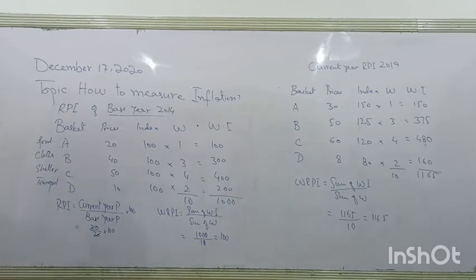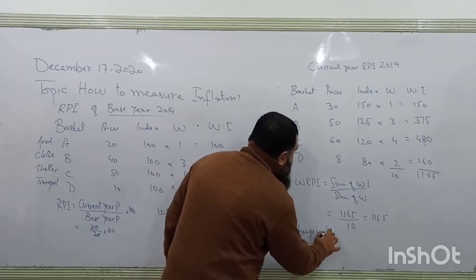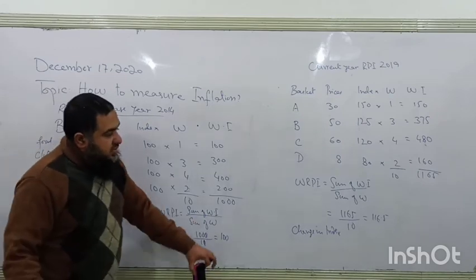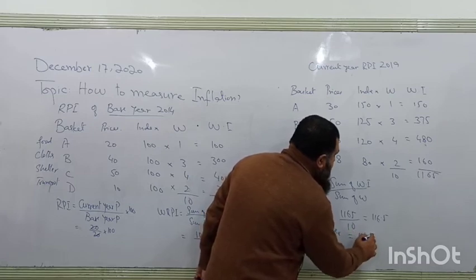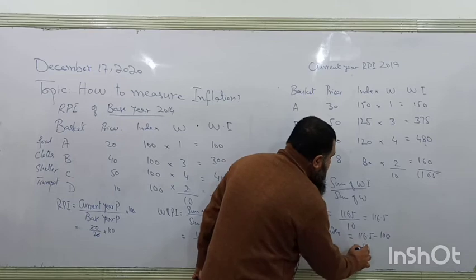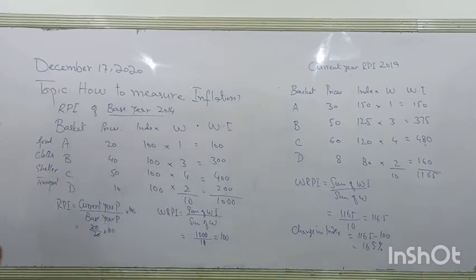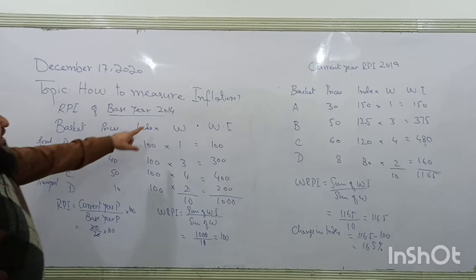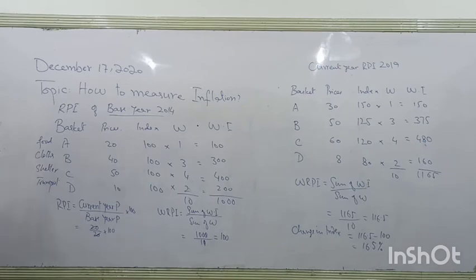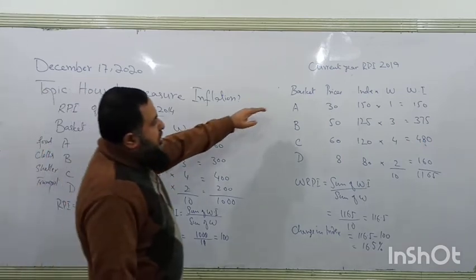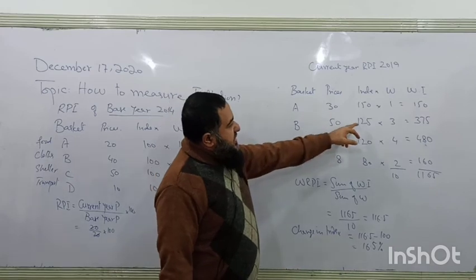The change in index with respect to the base year: 116.5 − 100 = 16.5. Therefore, the inflation rate in 2019 with respect to the base year is 16.5%.